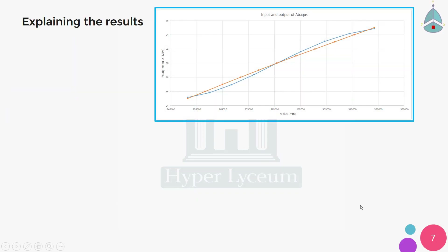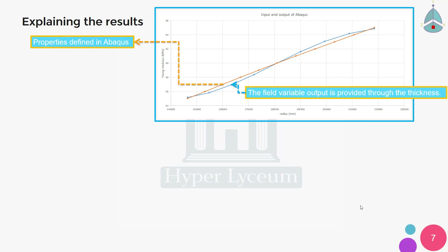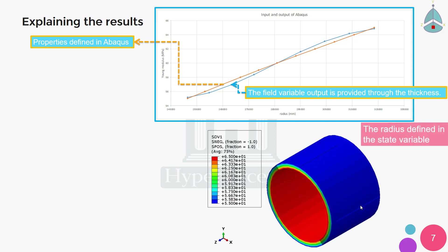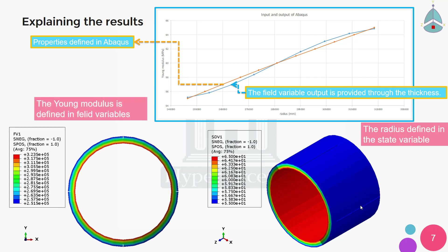In the orange chart you can see the properties defined in Abacus. In the blue chart, the field variable and state variable outputs through thickness can be seen. Here you can see the generated radius contour in the state variable, and in this picture the Young's modulus contour defined in the field variable can be seen.